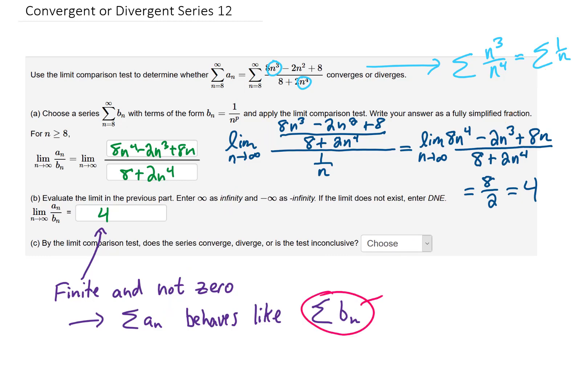Well we know that this sum, the infinite sum of 1 over n, diverges. That is a p-series with p equals 1, so it definitely diverges. And what that tells us is that our sum also must diverge.